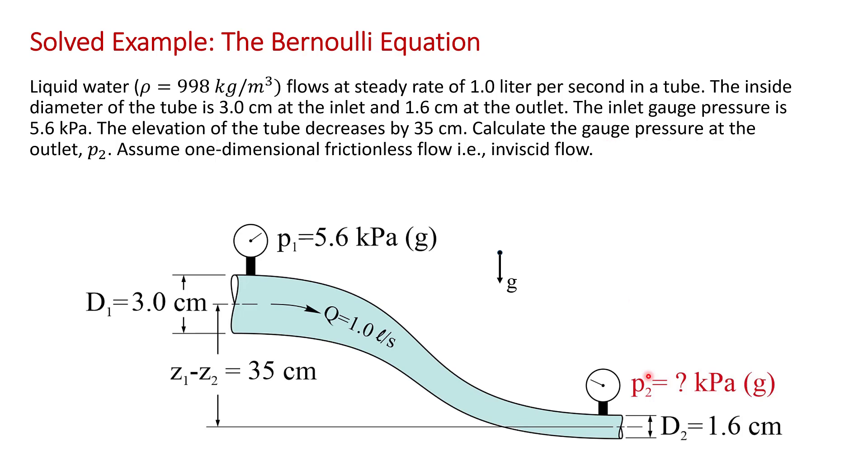And you're asked to calculate the gauge pressure at the outlet, P2, assuming the flow is one-dimensional and frictionless, so inviscid flow.